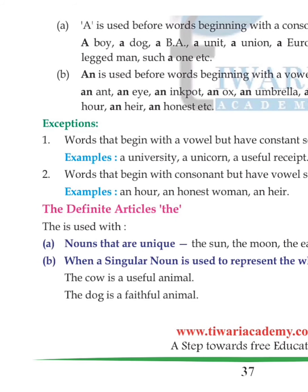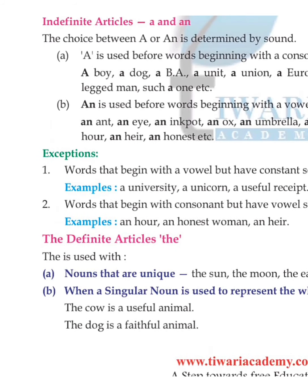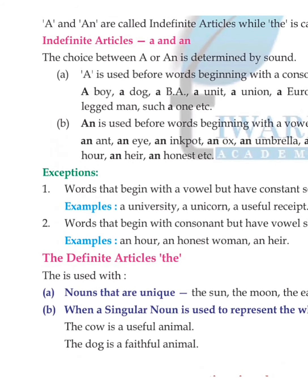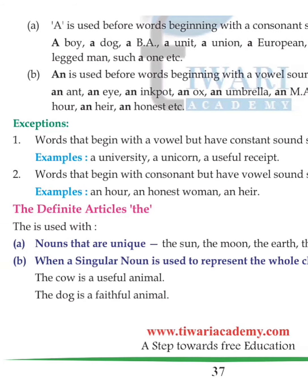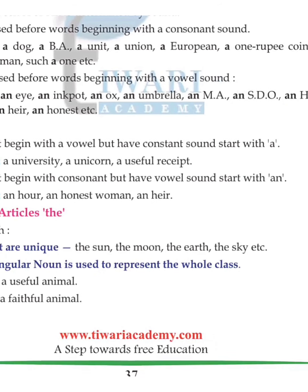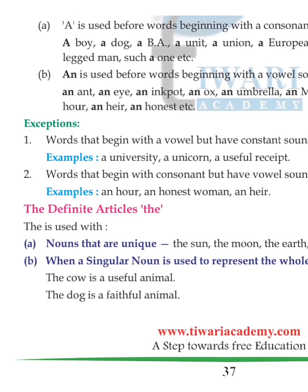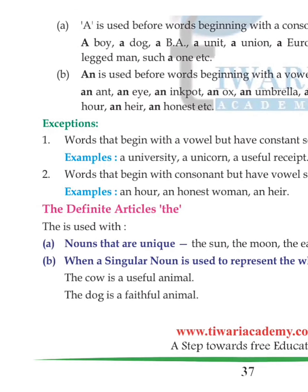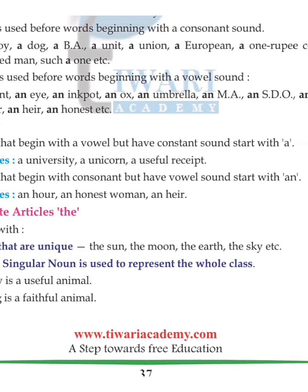Now definite article 'the'. 'The' is used before nouns that are unique: the sun, the moon, the earth, the sky, etc. 'The' is also used when a singular noun represents the whole class, like: the cow is a useful animal, the dog is a faithful animal.